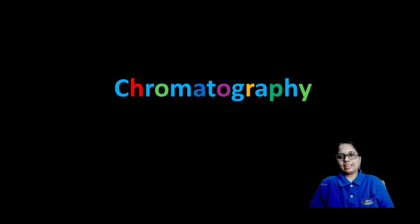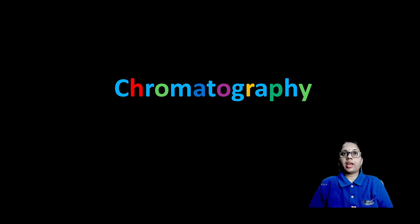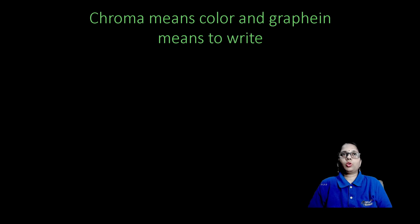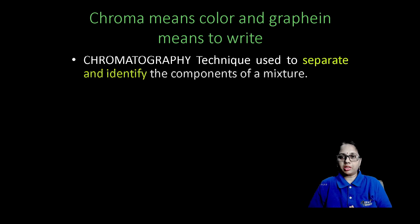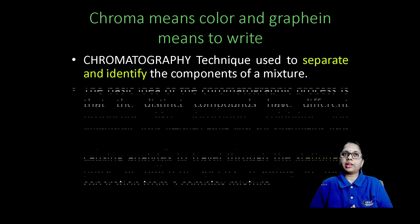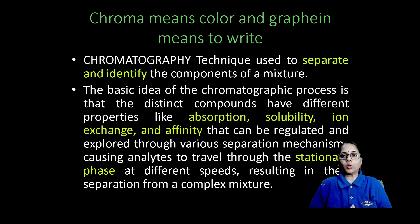Welcome to online GDC classes. Today we are going to have a basic idea on chromatography. Chroma means color and graphene means to write. Chromatography technique is used to separate and identify the components of a mixture.